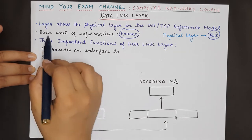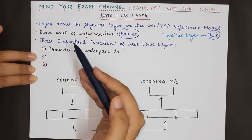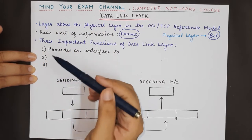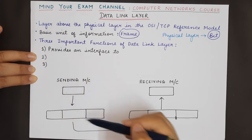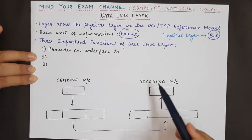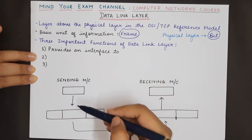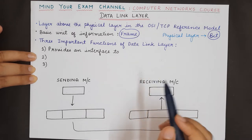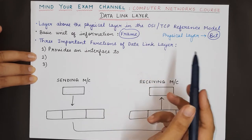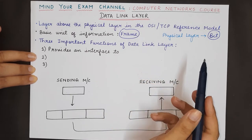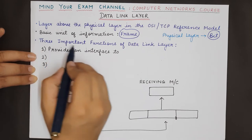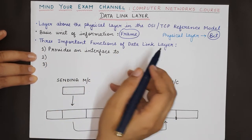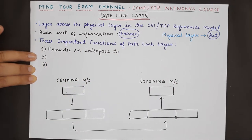The data link layer takes a packet from the network layer on the sender side and transmits it to the receiver side through the physical layer, and gives it to the network layer on the receiver side. There are three important functions that are performed by the data link layer.